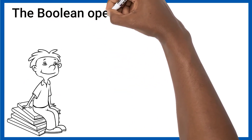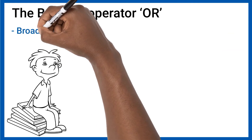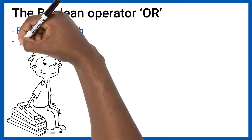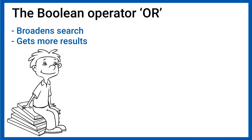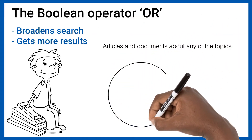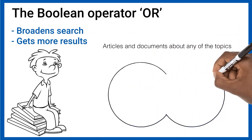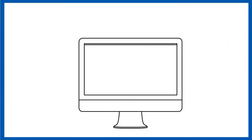The Boolean operator OR broadens your searches and returns more results for the user. By using this operator, the search engine recognizes that it should return results that use either of the provided keywords. This operator is convenient when a user is searching for similar ideas.